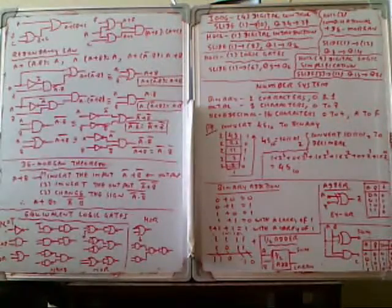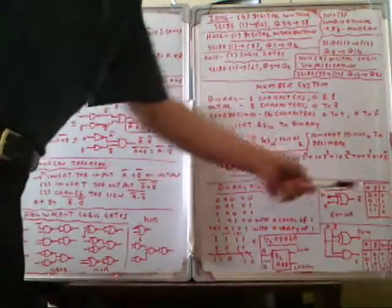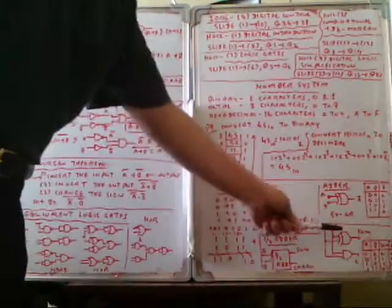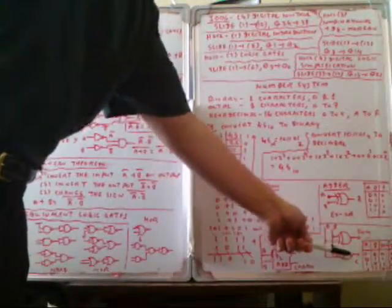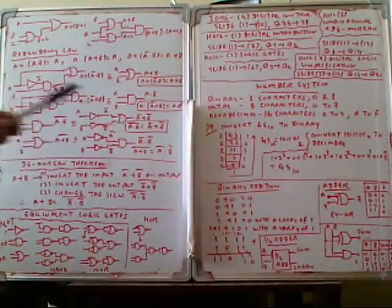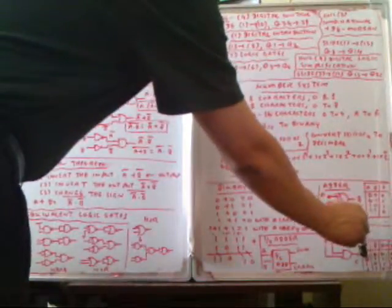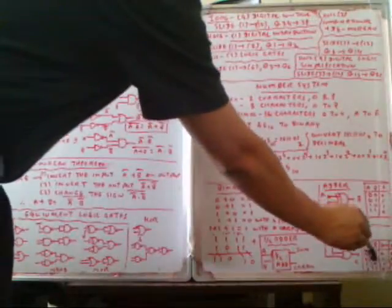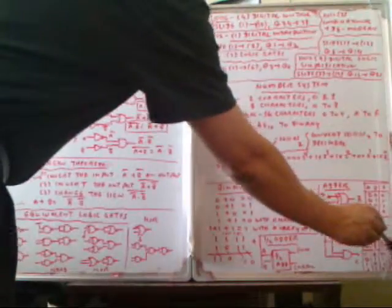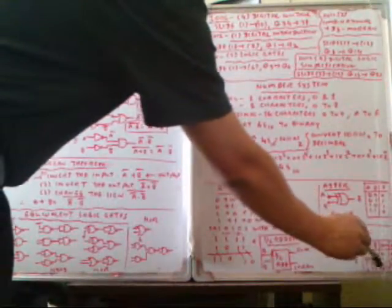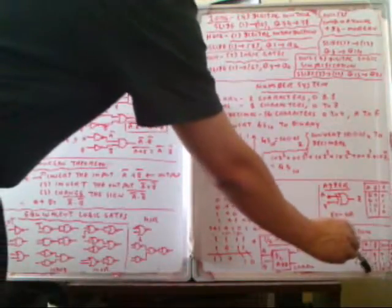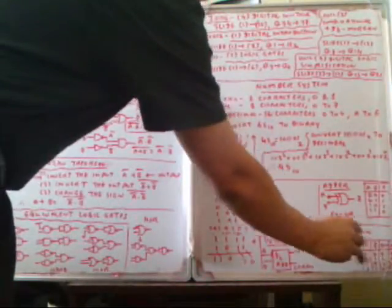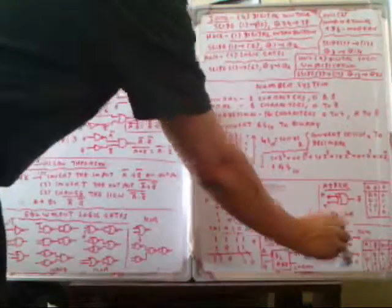The XOR gate provides the sum function but does not produce the carry. To generate the carry, we combine XOR with an AND gate. The truth table for the half adder is: A 0 B 0 gives Sum 0 Carry 0; A 0 B 1 gives Sum 1 Carry 0; A 1 B 0 gives Sum 1 Carry 0; A 1 B 1 gives Sum 0 Carry 1.